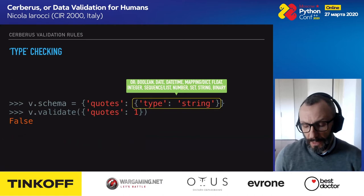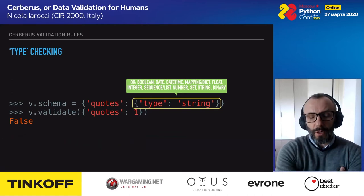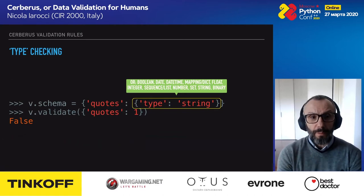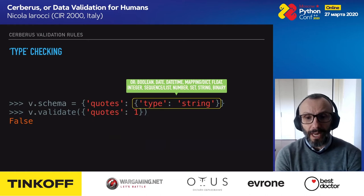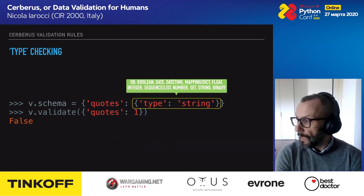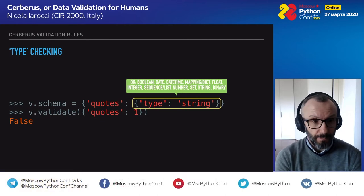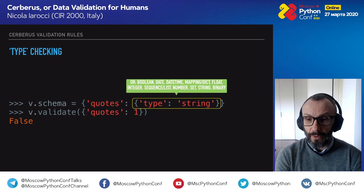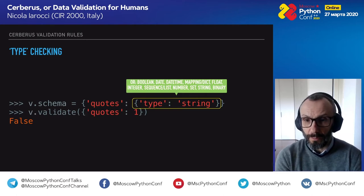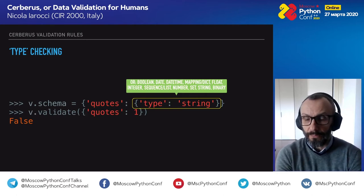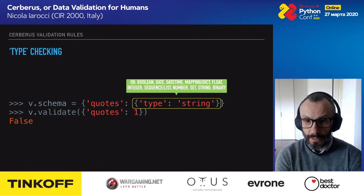Let's give a quick look at the validation rules Cerberus provides by default. Cerberus comes with a number of predefined validation rules, and then we'll see how to expand on them for custom needs. For type checking, you can define a type for a field, and Cerberus supports most of the default types supported by Python itself.